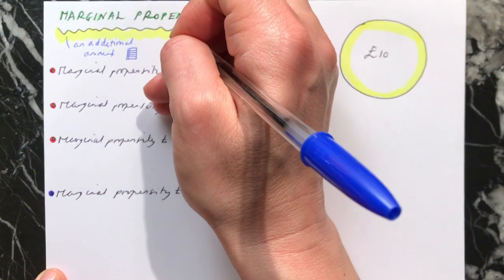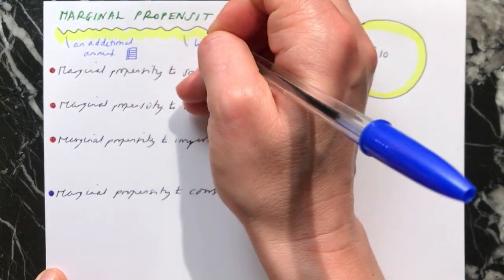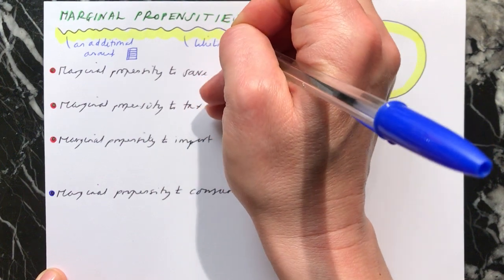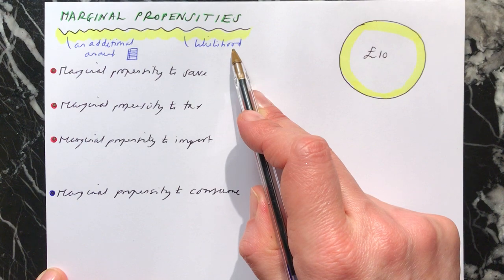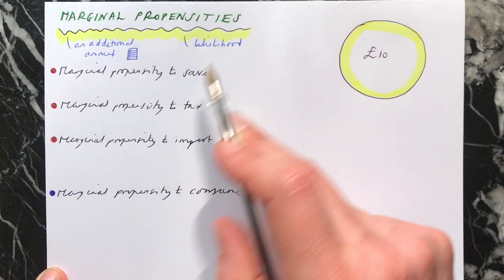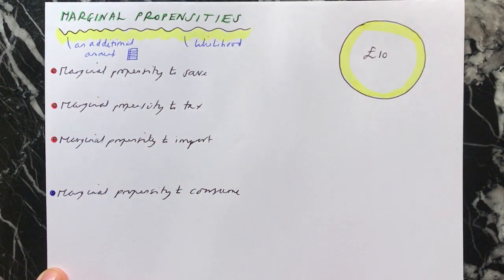Your propensity is your likelihood of doing something. How likely are you to do something? How much are you going to do something? And we've got four different types of marginal propensity that we're going to look at here.